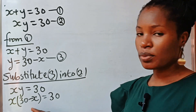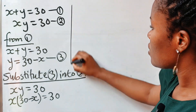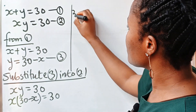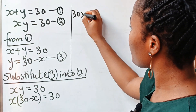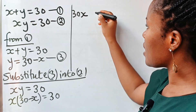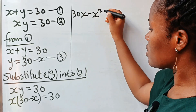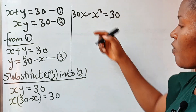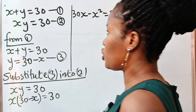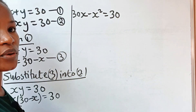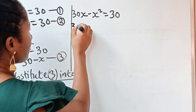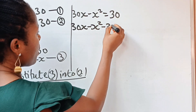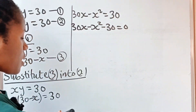Now let us open these brackets. We have x times 30, which is 30x, minus x times x, which is x squared, is equal to 30. Now let's transfer this to the other side of the equation. We'll have 30x minus x squared minus 30 is equal to 0.